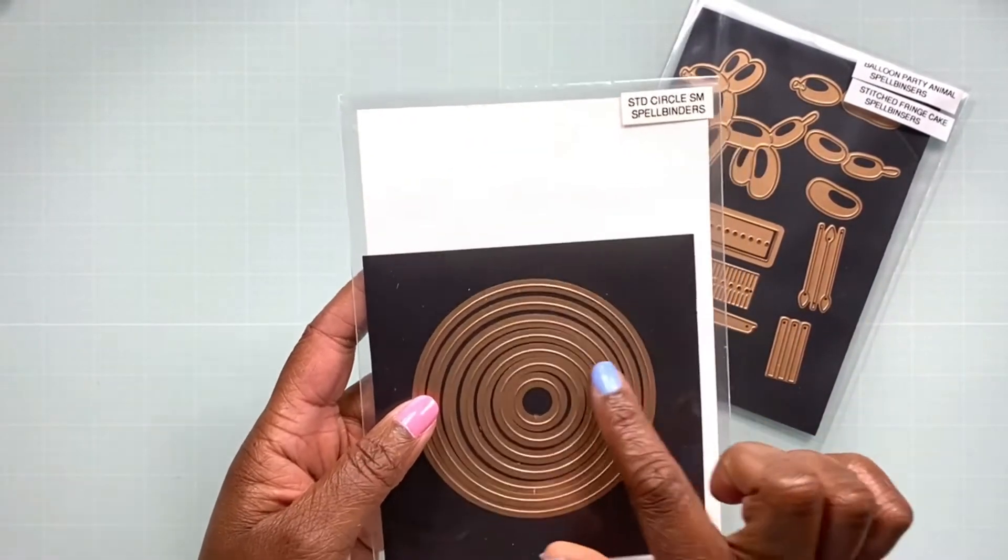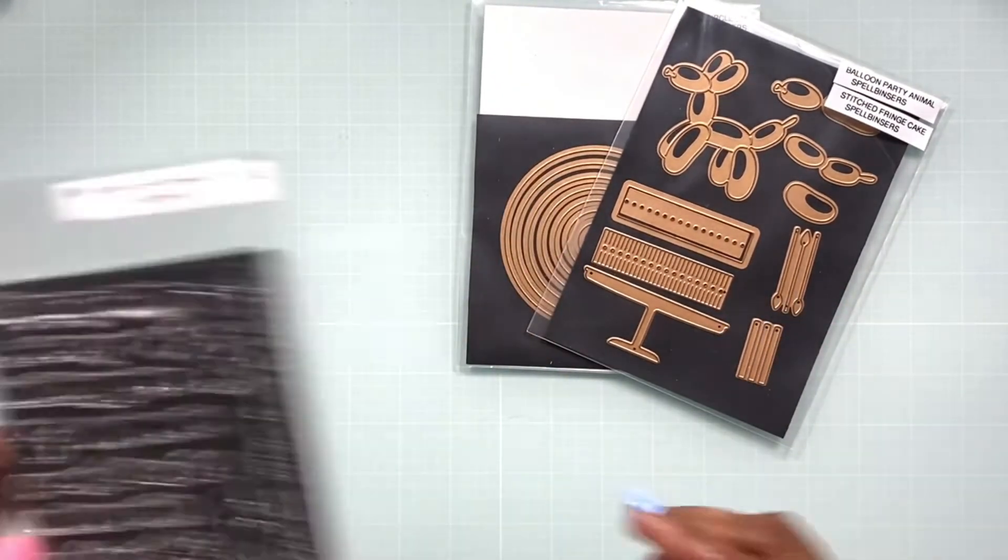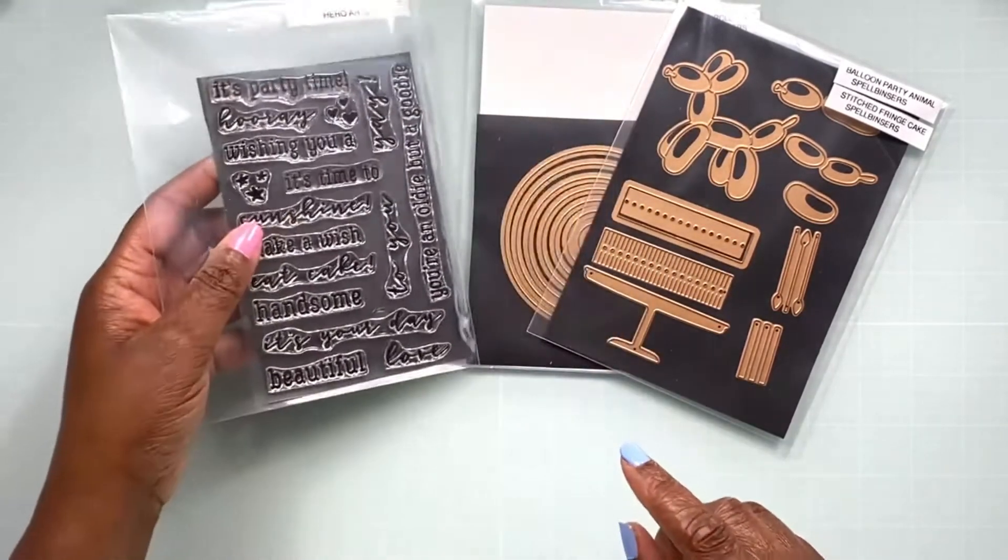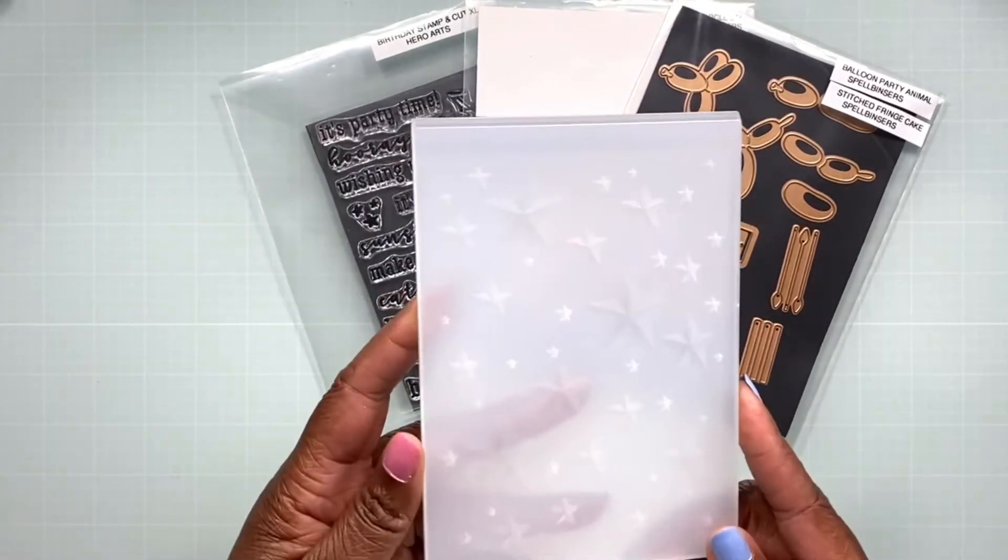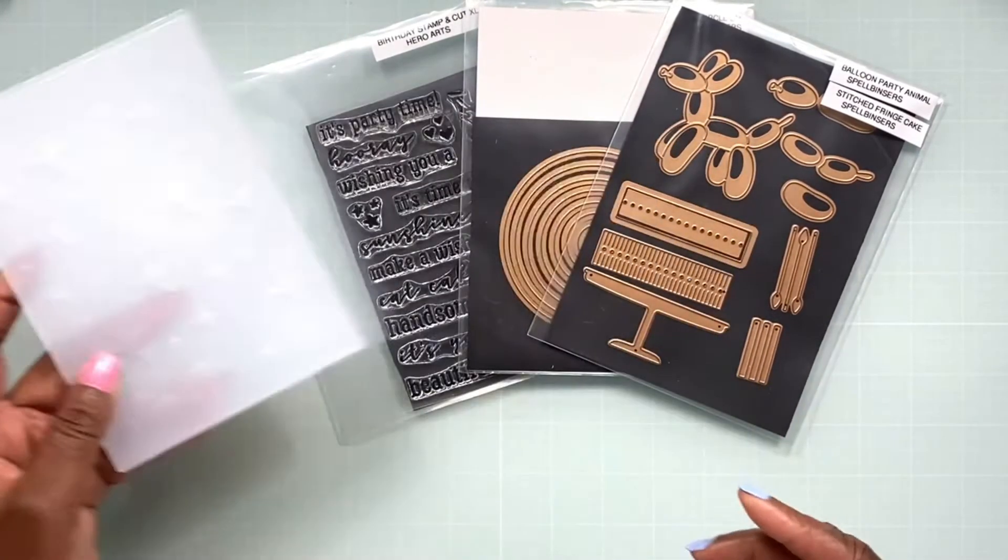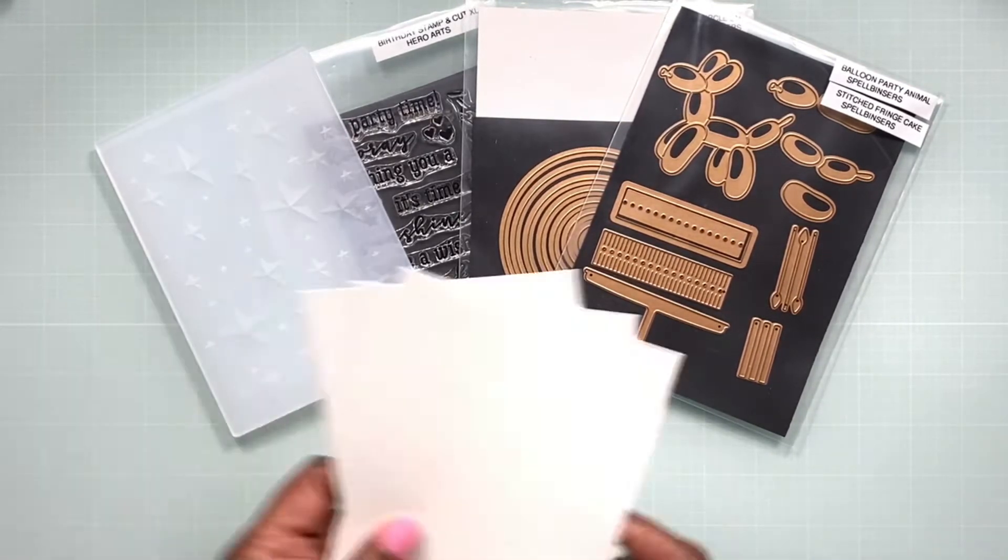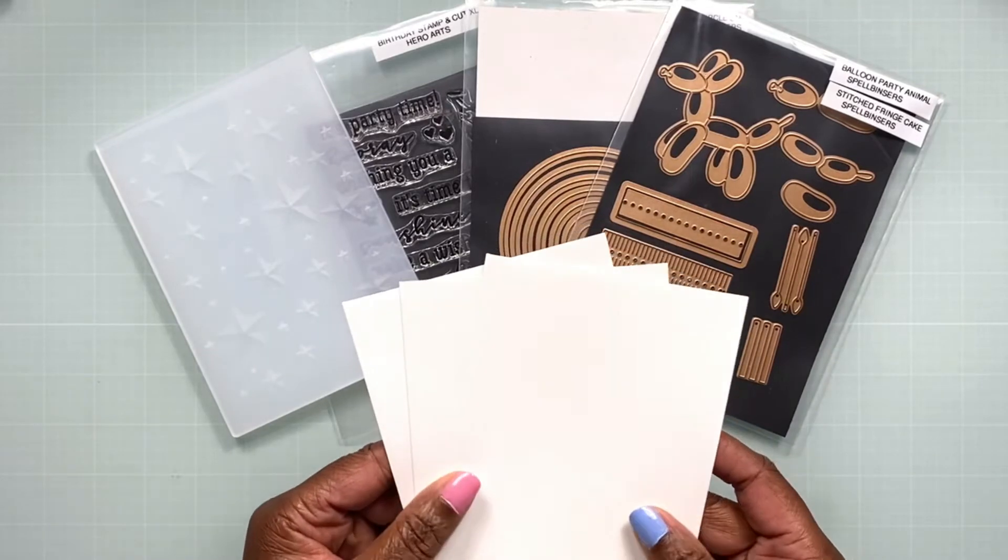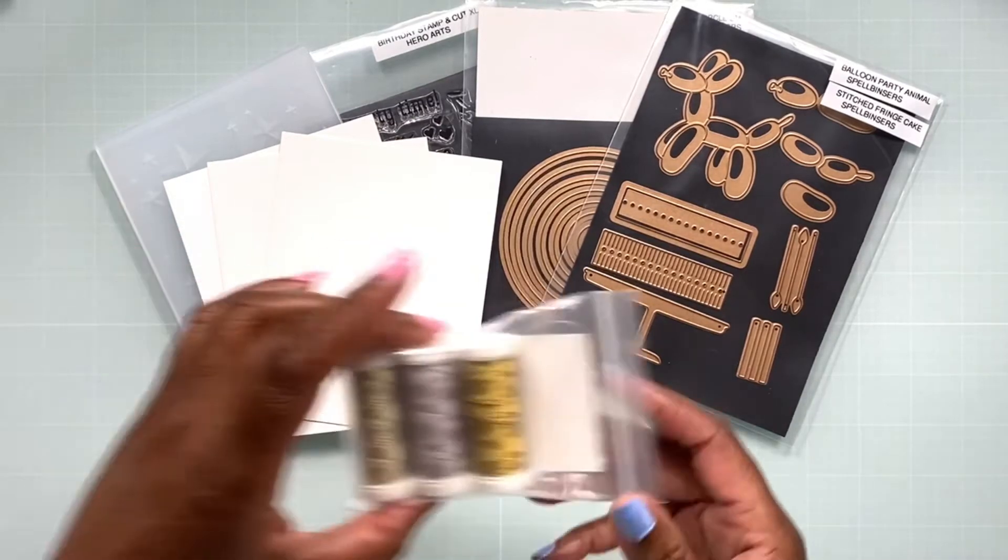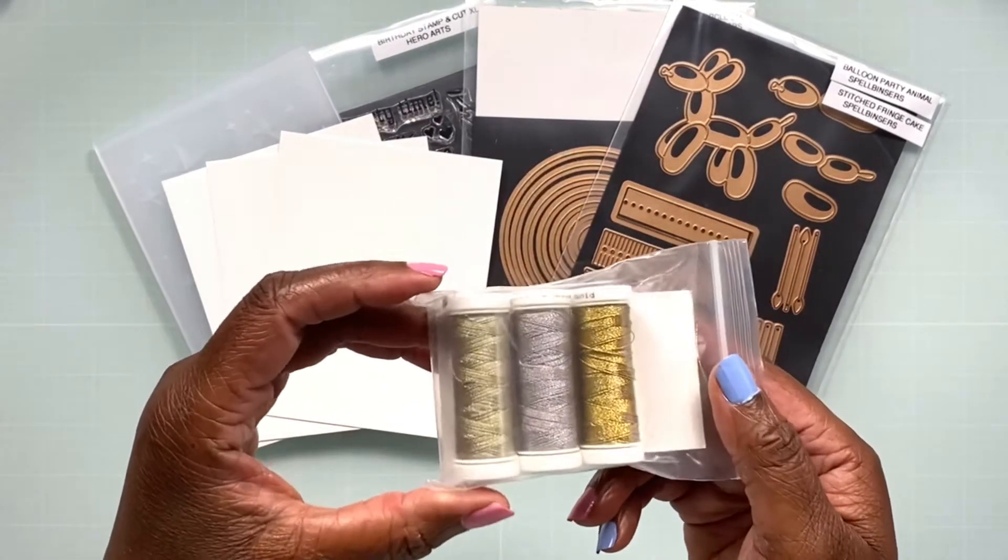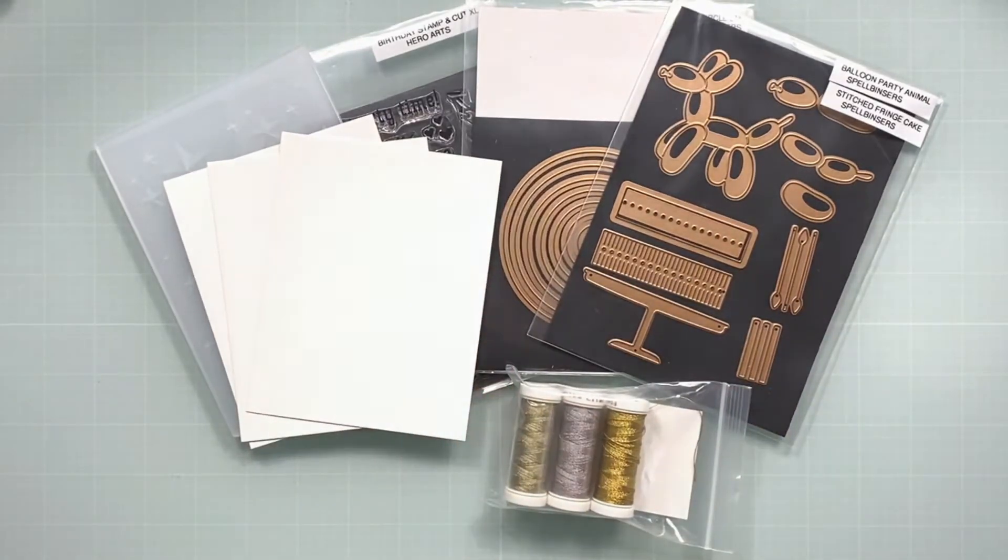I'm going to be pulling in an older basic circle set also from Spellbinders, this is the Standard Small Circle set. I thought I was going to be able to use the birthday stamp set from Hero Arts, but I decided not to use a sentiment at all. I'm also going to be using the Dimensional Stars embossing folder from Simon Says Stamp. As always, I'm going to be using a couple of pieces of Neenah Classic Crest Solar White in the 80-pound weight, and this time I'm going to be using some of the metallic threads from Altenew. Let's get started.